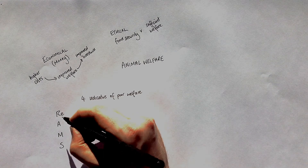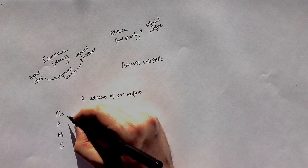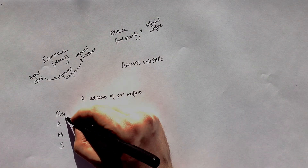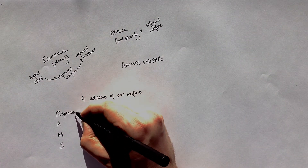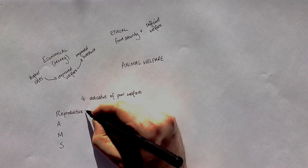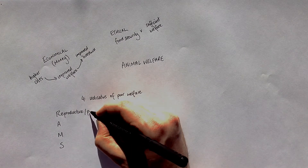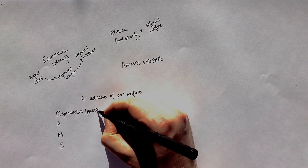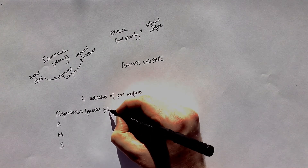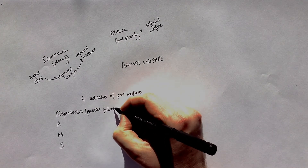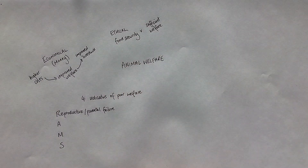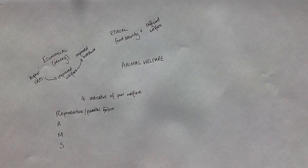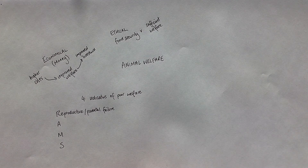The R is for reproductive or parental failure. Any animals that are failing to breed, or are not looking after offspring properly, are indicating that they are being poorly looked after.